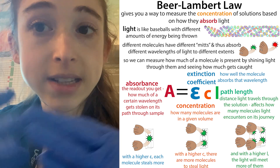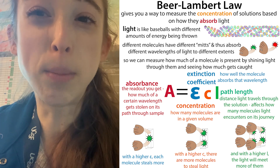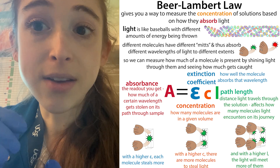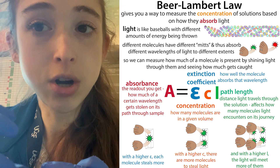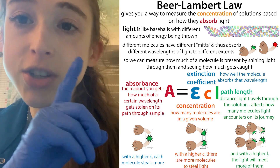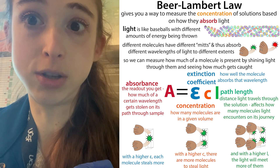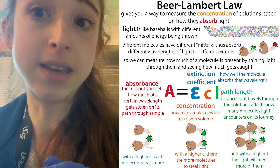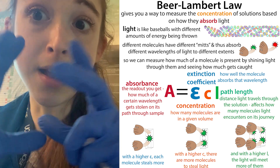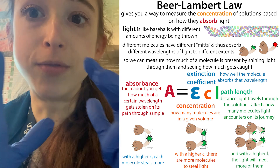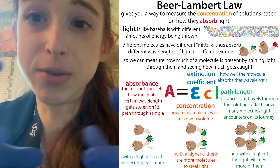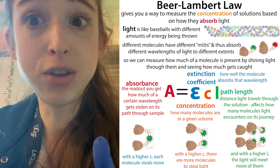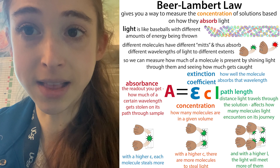These factors are taken into account with Beer's Law. The extinction coefficient accounts for how much each copy of the molecule absorbs light at a specific wavelength. Then you have the number of copies per volume - essentially the concentration, C. And then you have to take into account the path length.